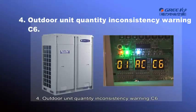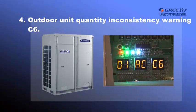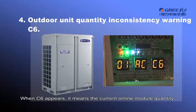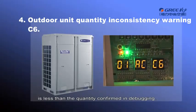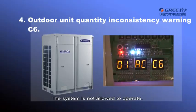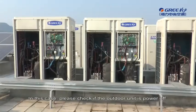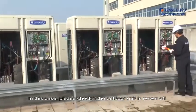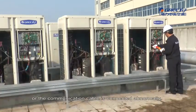Outdoor unit quantity inconsistency warning. When C6 appears, it means the current online module quantity is less than the quantity confirmed in debugging. The system is not allowed to operate. In this case, please check if the outdoor unit is powered off or the communication cable is connected abnormally.